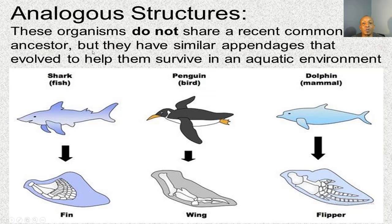These organisms do not share a recent common ancestor but they have similar appendages that evolved to help them survive in an aquatic environment. Looking at the shark, the penguin, and the dolphin — their appendages have different structures, but those appendages evolved to help them swim. So analogous structures share similar functions but have different structures.